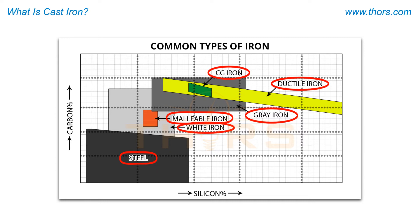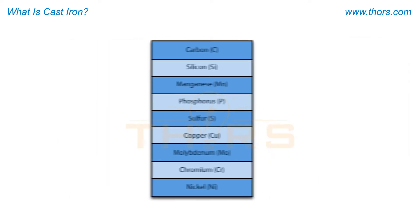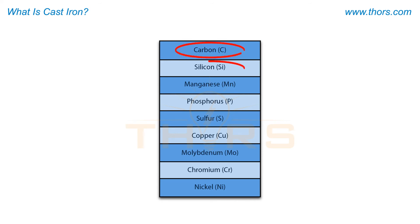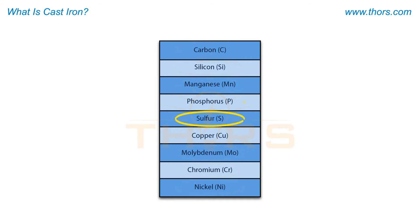Steel, which is a ferrous metal that has less than 2% carbon, may also be cast. In addition to carbon and silicon, other alloying elements such as manganese, copper, nickel, molybdenum, and chromium are added to cast iron as required by the final chemistry. Sulfur and phosphorus are also important elements that must be controlled and kept at very low levels for certain cast irons.